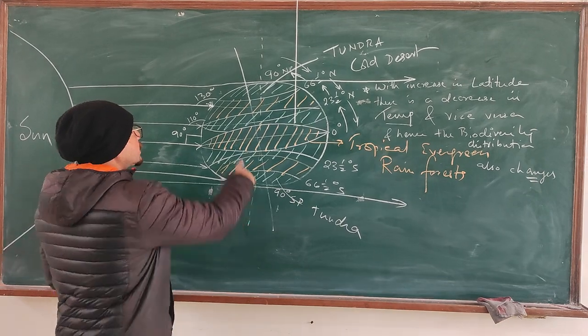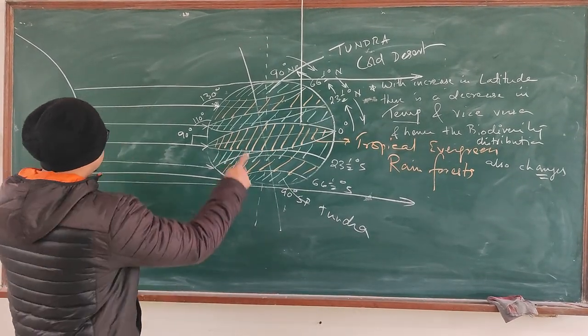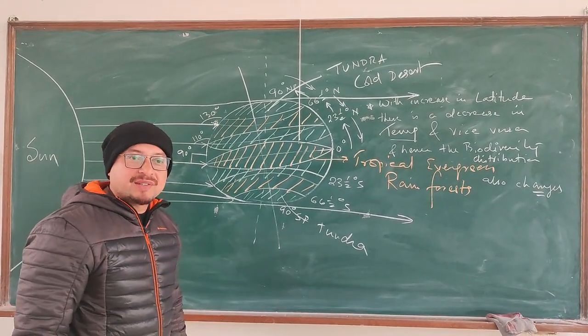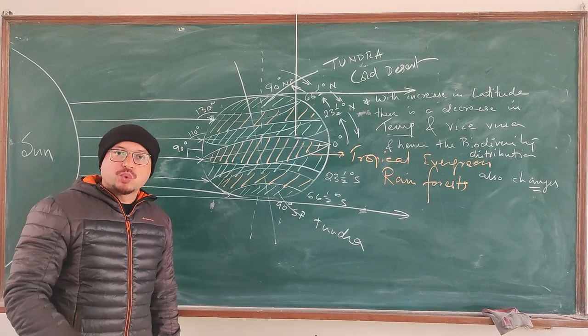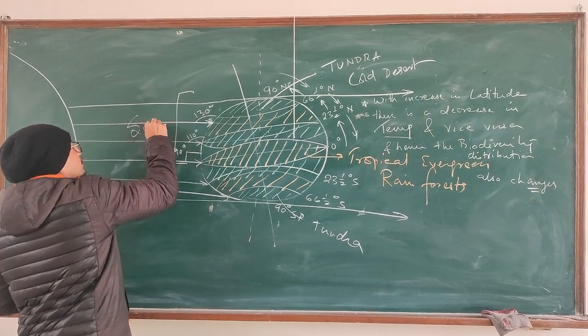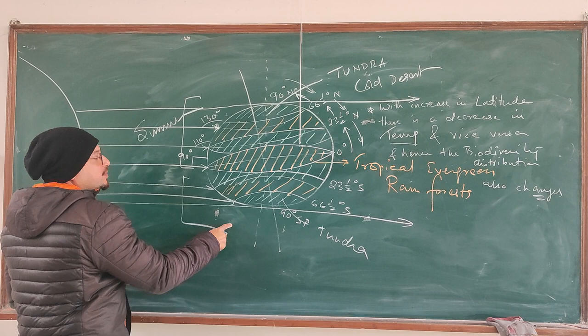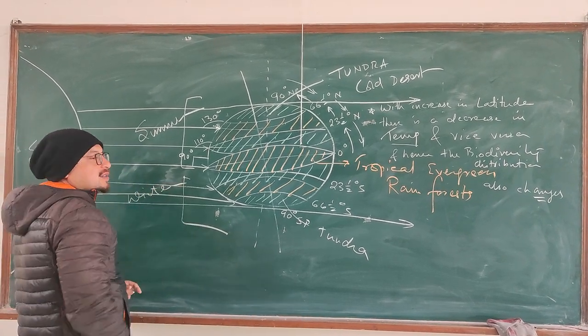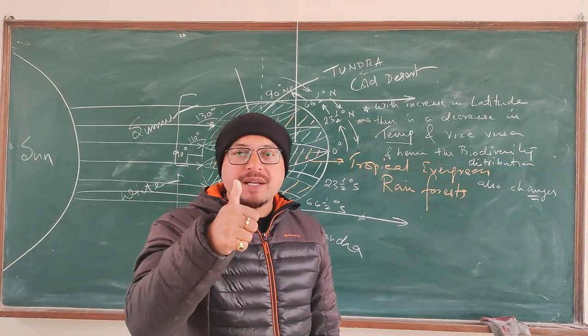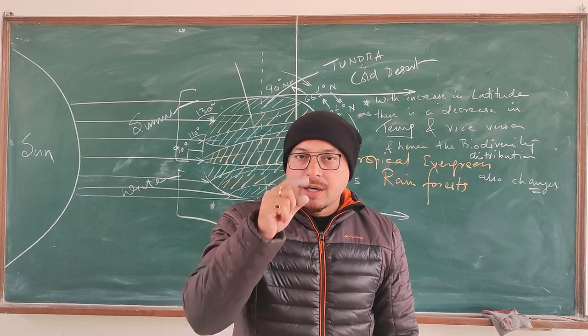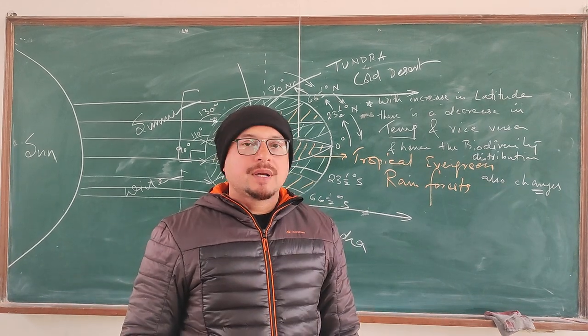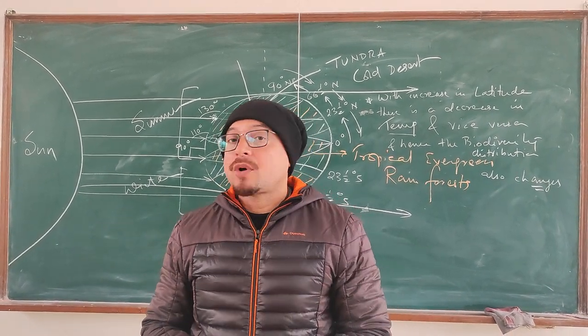Now let's talk about the tilt. If you look at this particular diagram, you see the northern hemisphere is tilted towards the sun and the southern hemisphere is away from the sun. By virtue of the tilt, the northern hemisphere would experience summer and the southern hemisphere would be experiencing winter. So therefore, climatic conditions are governed by the shape of the earth, the tilt of the earth, which in turn governs different types of ecosystems on earth.